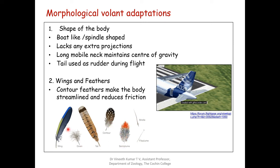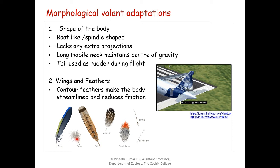The semi-plume and the down feathers differ in that the down feathers are seen very close to the body, while the semi-plume has a central axis that is lacking in down feathers. Both down feathers and semi-plume lack the interlocking mechanism. Their main function, as they are seen very close to the body, is to preserve heat — preventing heat loss from the body.